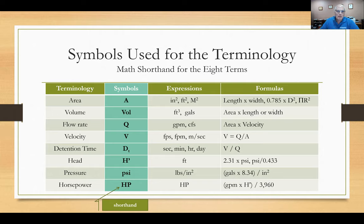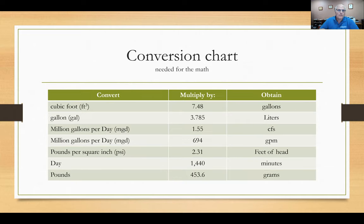You can refer back to this table by reversing the video. There's a conversion chart included that you'll need for the math problems shown today. For example, if you want to convert cubic feet to gallons, multiply by 7.48. I set this chart up so that you always multiply — you never divide. Anything on the left is multiplied by the middle column to obtain the value on the right.